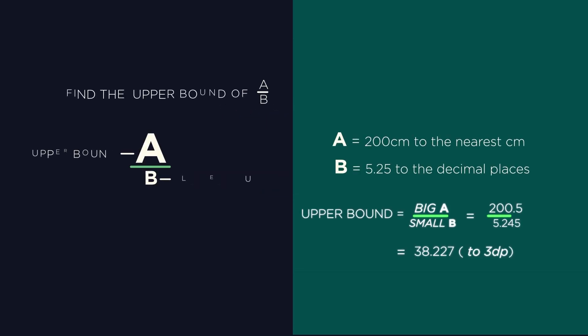But what about when we're dividing? For the upper bound, we want A divided by B to be as big as possible. So we want A to be big, which is then divided by the smallest possible B. So A must be its upper bound and B must be its lower bound.